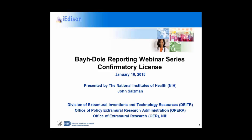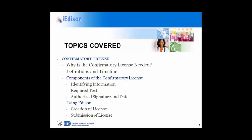Welcome to our webinar series on Invention Reporting and the Use of Interagency Edison. My name is John Salzman, and I'll be walking you through the reporting of the confirmatory license. Our topic — confirmatory licenses — covers why they're needed, how to report them using Edison, what they are, why they're required, all the different components of the license, how to create and put them into the system, the timeline for when they are needed, required text, who has to sign them, and how they can be created with the greatest ease.